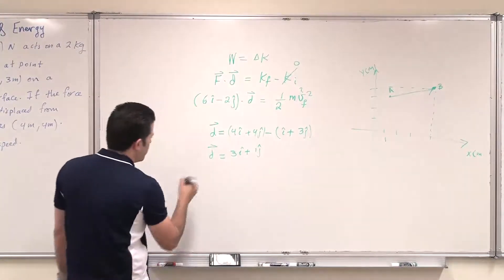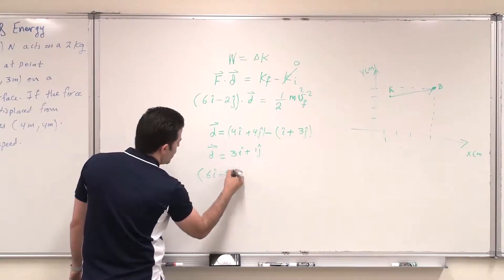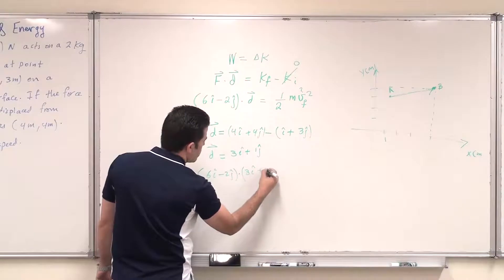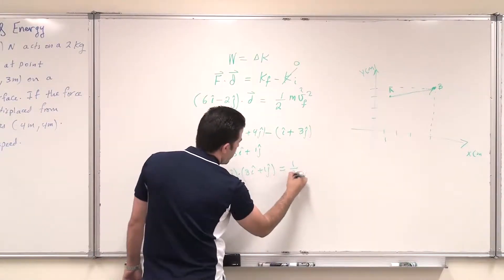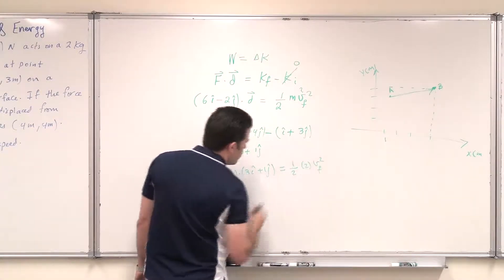So now I can do the dot product. So 6i hat minus 2j hat dot product with 3i hat plus 1j hat should equal half, and the mass is 2, and v final square is unknown.